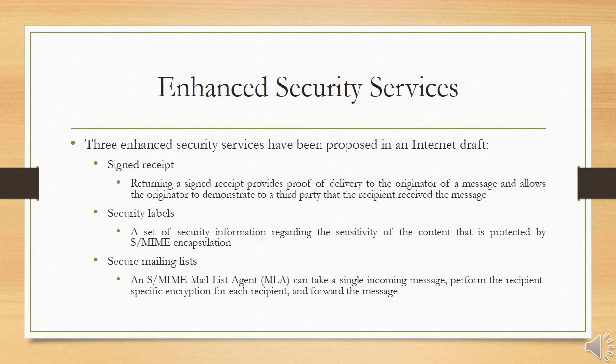Three enhanced security services have been proposed in an internet draft, though details may change and additional services may be added. The three services are: signed receipts, security labels, and securing mailing lists. A signed receipt may be requested in a signed data object. Returning a signed receipt provides proof of delivery to the originator and allows the originator to demonstrate to a third party that the recipient received the message. The recipient signs the entire original message plus the original sender's signature and appends the new signature to form a new S/MIME message.